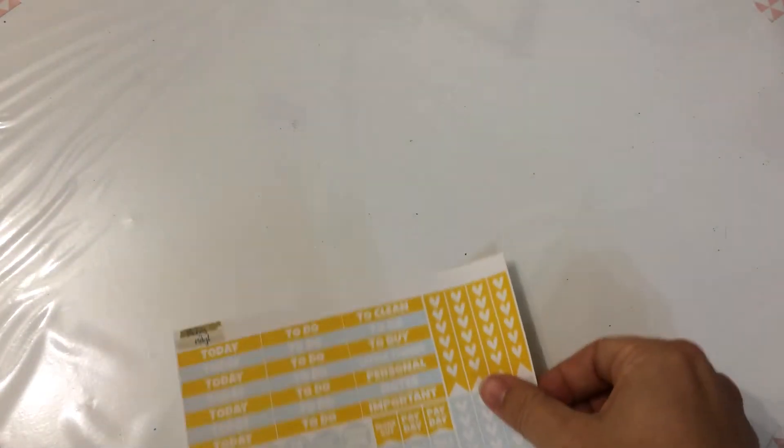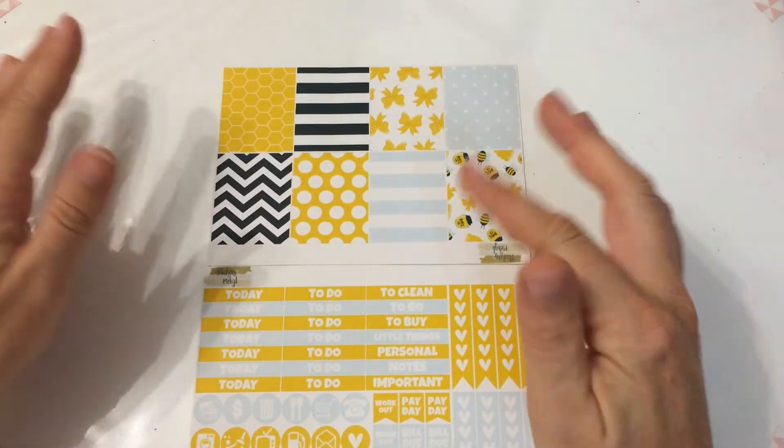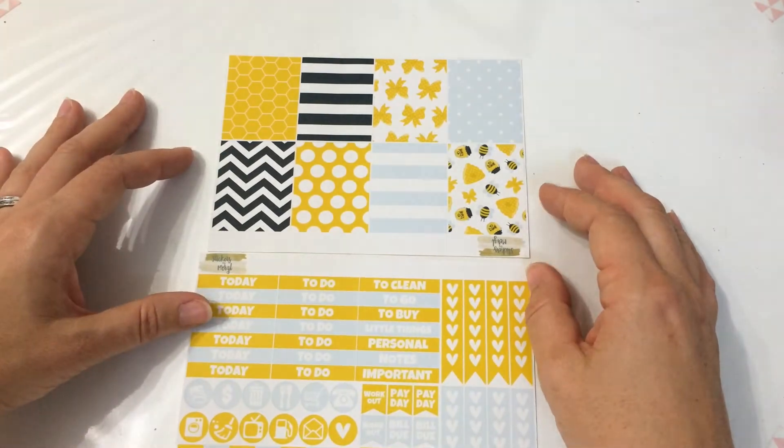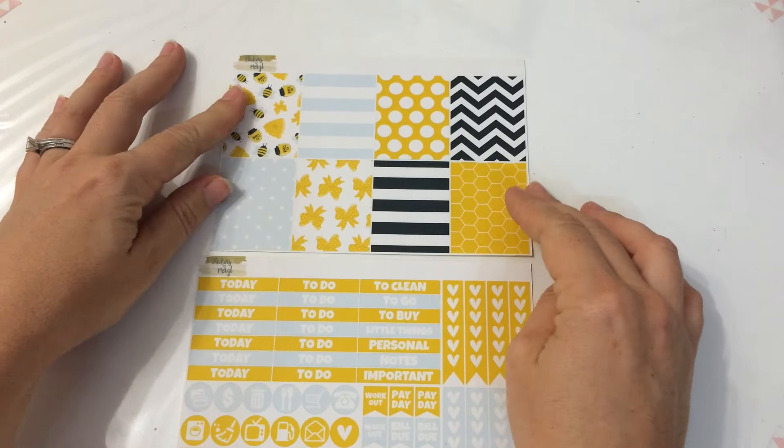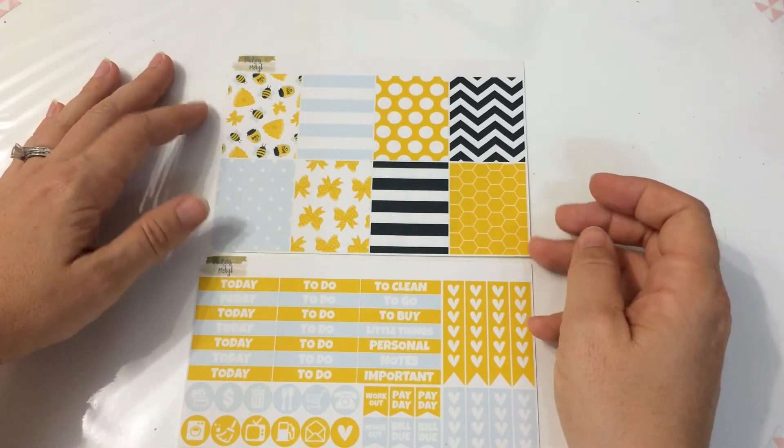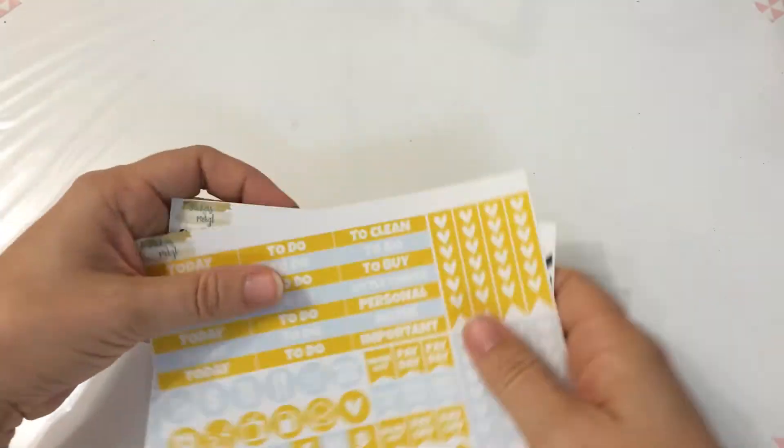And the last two sheets from those packs are these, another like kind of half a kit. And again, something I would never have picked myself if I was going to purchase them. Like bee kind of theme, black and white and yellow and like a baby blue. Okay so that's all from Stickers by Meryl.